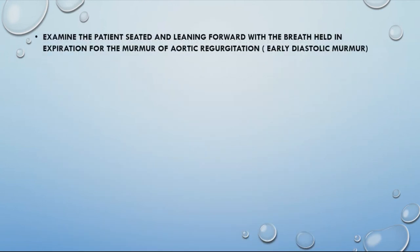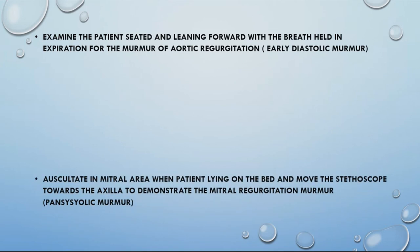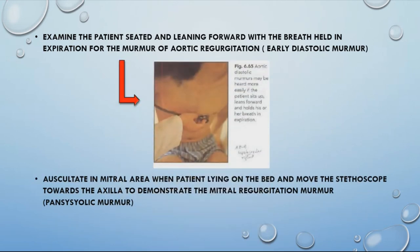Next, examine the patient seated and leaning forward, with breath held in expiration, to listen for the murmur of aortic regurgitation. We use expiration because the aorta comes closer to the chest wall during expiration. The murmur of aortic regurgitation is an early diastolic murmur.